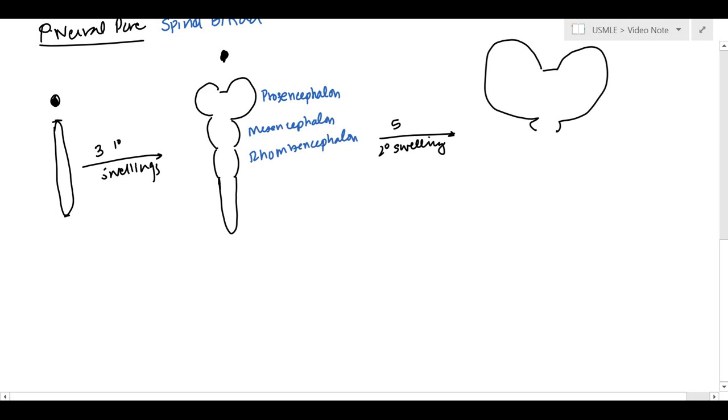So, the prosencephalon is going to become telencephalon, and it's also going to become the diencephalon. The telencephalon is going to become your cerebrum, and this is where you're going to get the lateral ventricles as well. The diencephalon is going to become, you know, thalamus and some other structures, and this is where the third ventricle is going to be located.